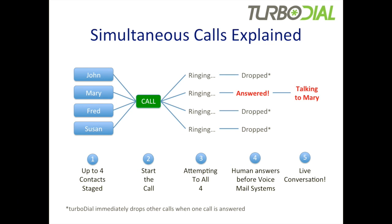In this image, we have four contacts that have been staged: John, Mary, Fred, and Susan. When you click the call button, TurboDial will attempt to connect to all four of them and start ringing their phones. However, the human is going to answer before a voicemail system in most cases. So when Mary hears her phone ringing and answers, all the other three will immediately be dropped by TurboDial, and now you're having a live conversation with Mary.